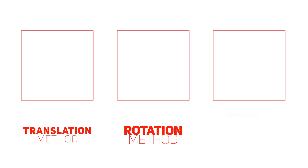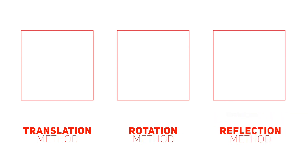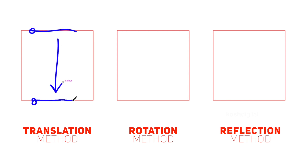There are three types of tessellation: translation, rotation, and reflection. In the translation method, whatever you remove from or add to the geometry, you put it back or remove it from the opposite edge. Basically, you are sliding a portion from one edge to the opposite edge.